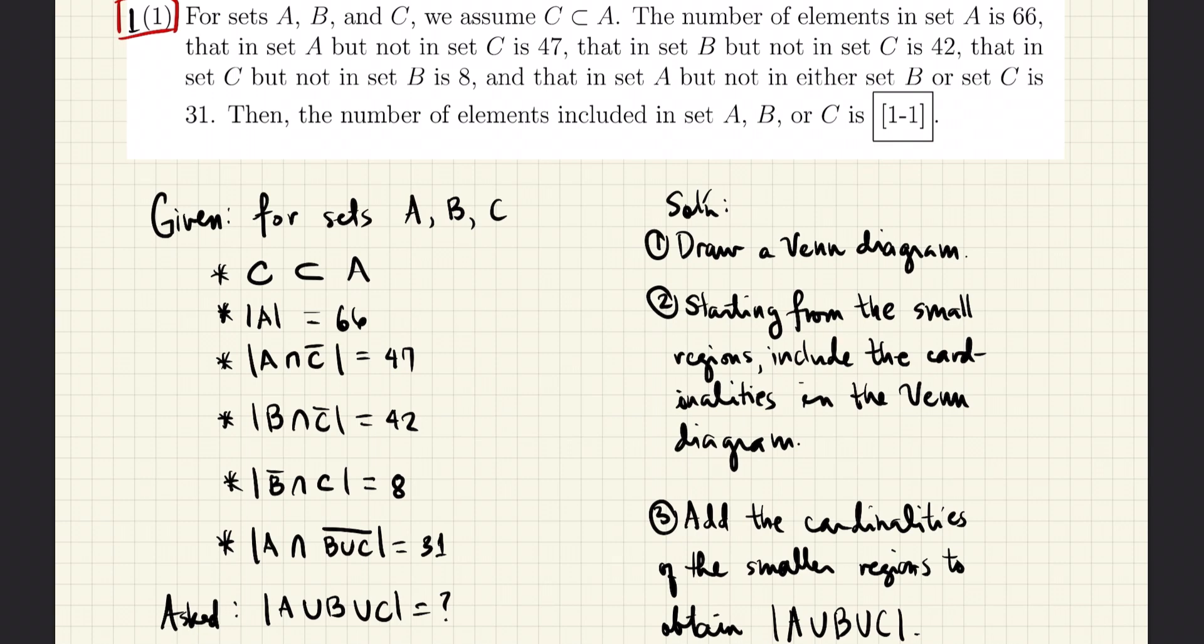First, we write down the given. From the problem, we know that for sets A, B, and C, C is a subset of A. We also know that there are 66 elements in A. Then, this phrase here translates to the intersection of A and the complement of C. The number of elements in that set is 47.